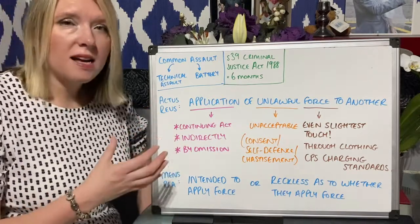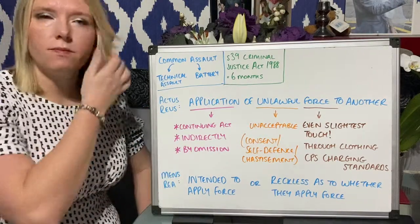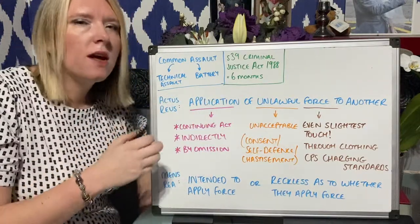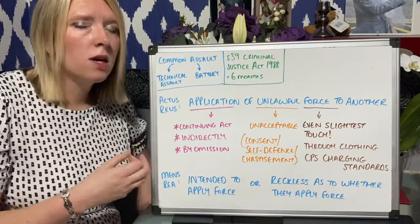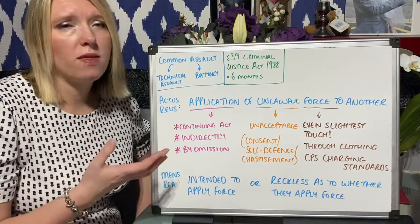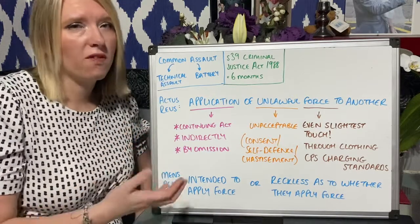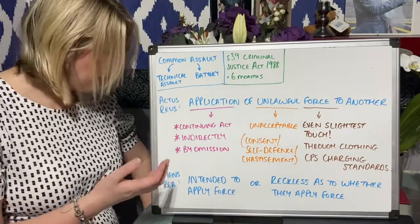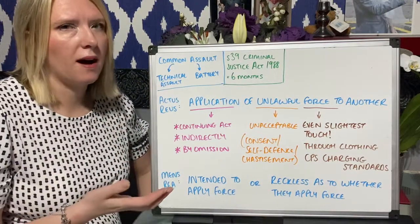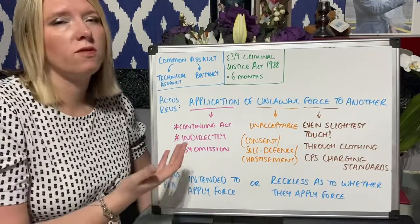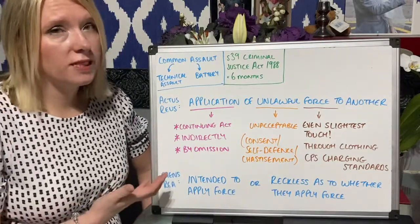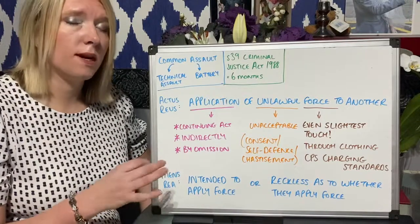The two tend to happen together — someone threatens 'I am going to punch you' and then they punch. So you tend to get assault and battery very quickly together. But you can of course get battery without an assault, and that would be where the person doesn't expect force before it actually occurs to them. So an example would be if a person was approached from behind or in the dark — the victim wouldn't fear force before it was actually applied to them.